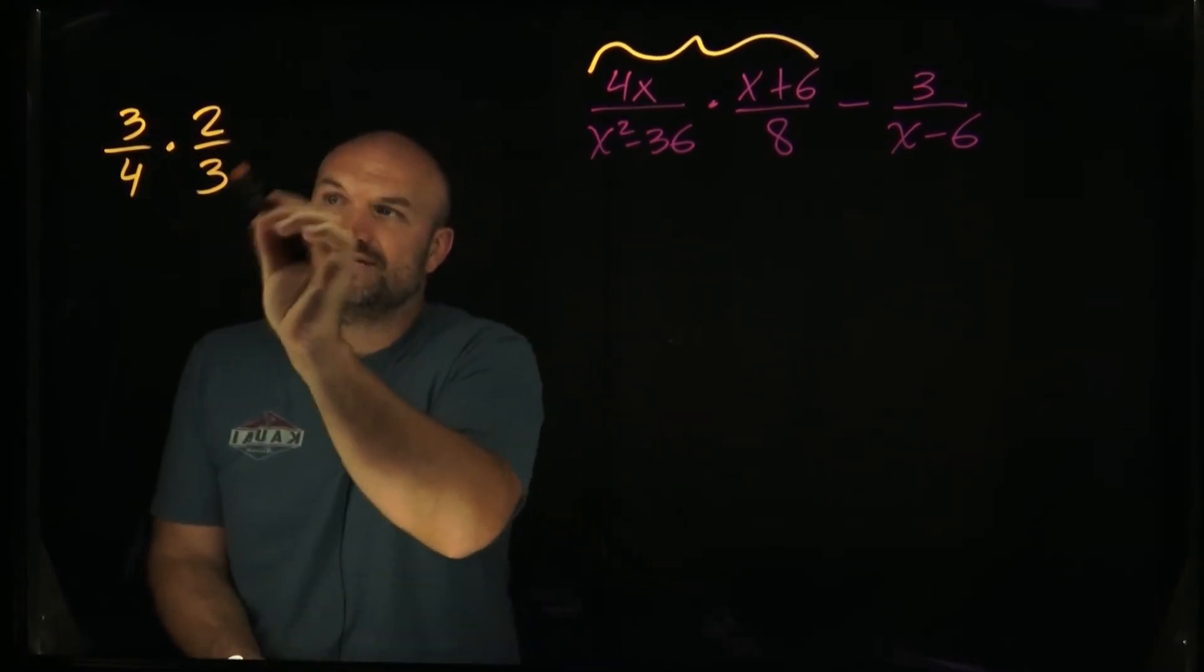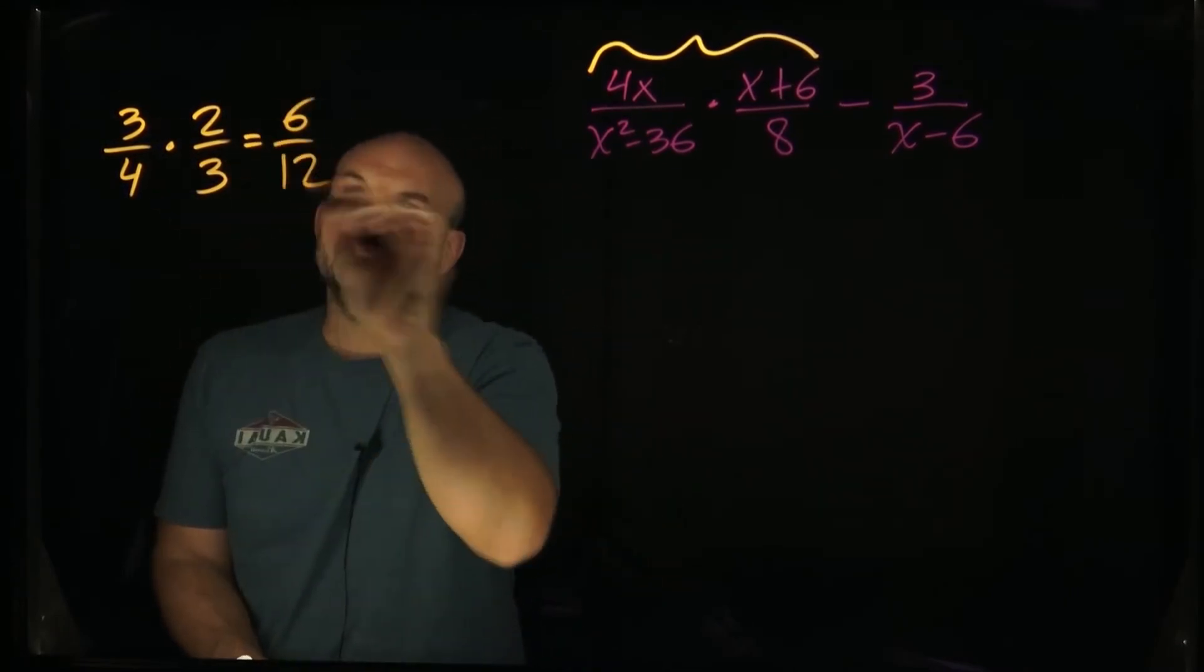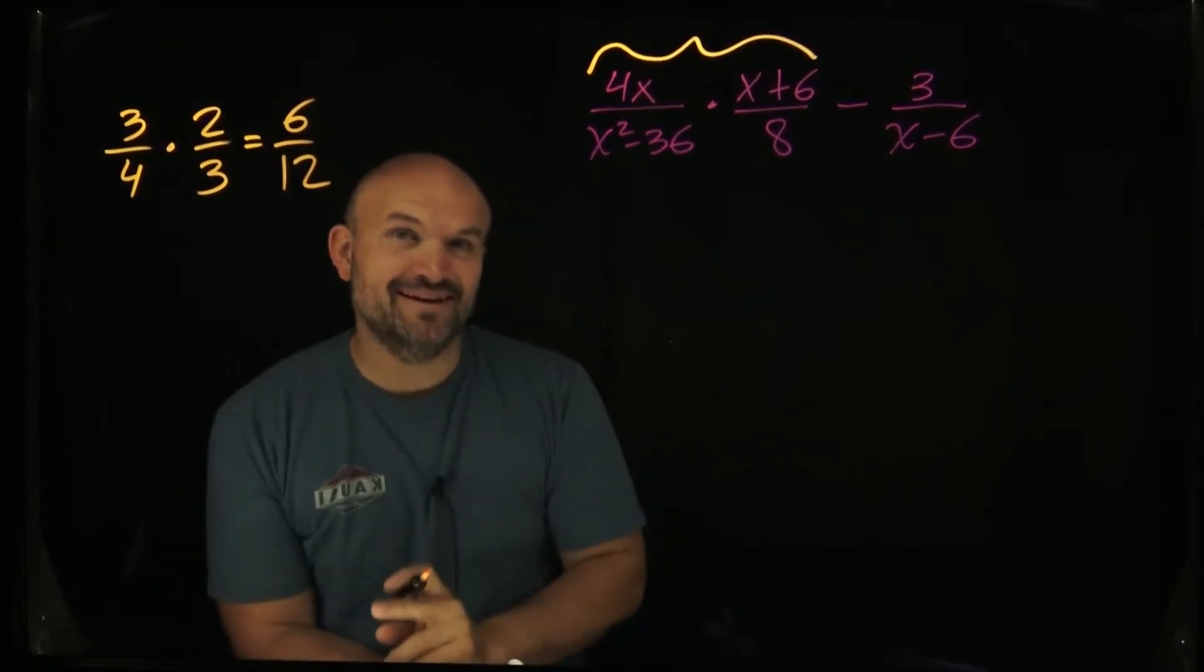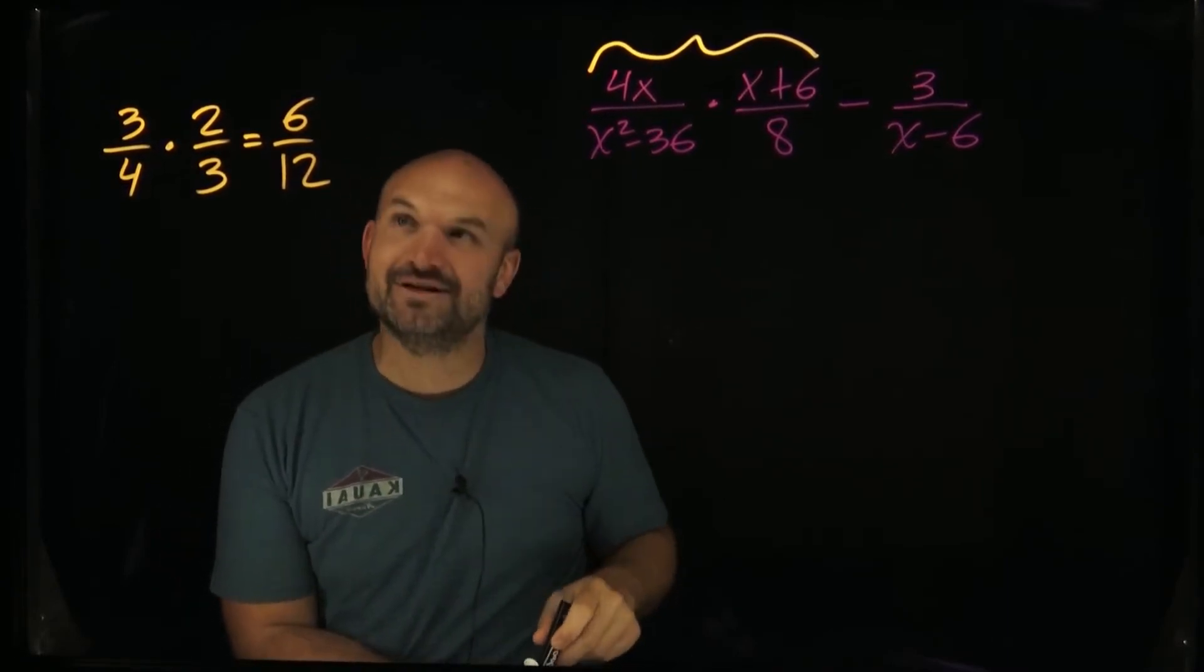So 3 times 2 is going to equal 6, 4 times 3 is equal to 12. Now, the one thing I want you to remember, and this is another arch nemesis for so many students...